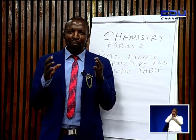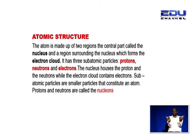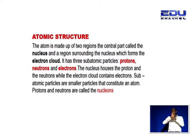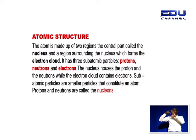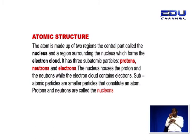The atom is made up of two regions: the nucleus and the electron cloud, which is the region surrounding the nucleus. The nucleus, which is the central part of an atom, contains two subatomic particles — the neutrons and the protons. The neutrons and the protons are called the nucleons, because they are found within the nucleus.